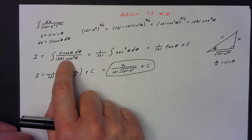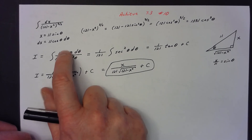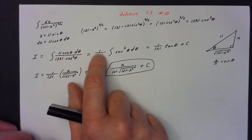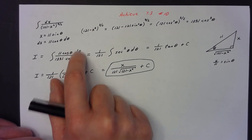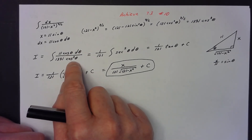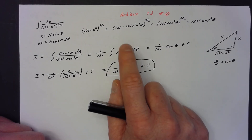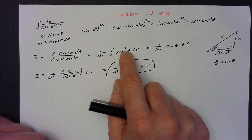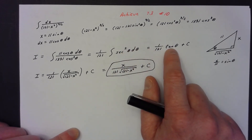Going back to the integration problem: the numerator dx is 11 cos θ dθ. 11 over 1331 factors out as 1/121. Cosine over cosine cubed reduces to 1/cos², which is sec². It's more obvious as secant squared — the antiderivative of sec² θ is tan θ, so the integral is (1/121) tan θ plus the constant of integration.